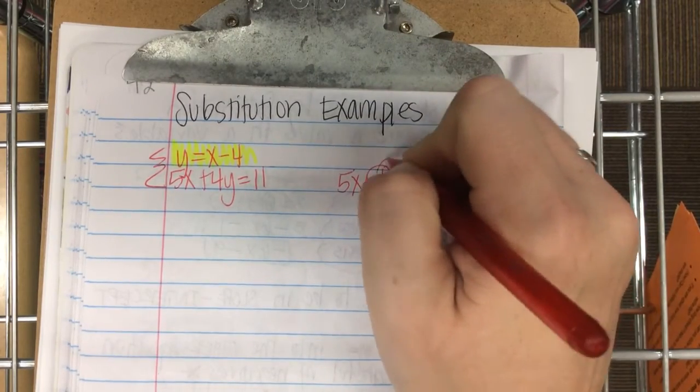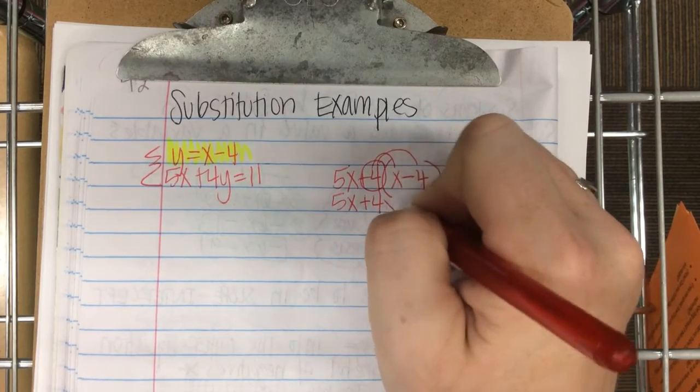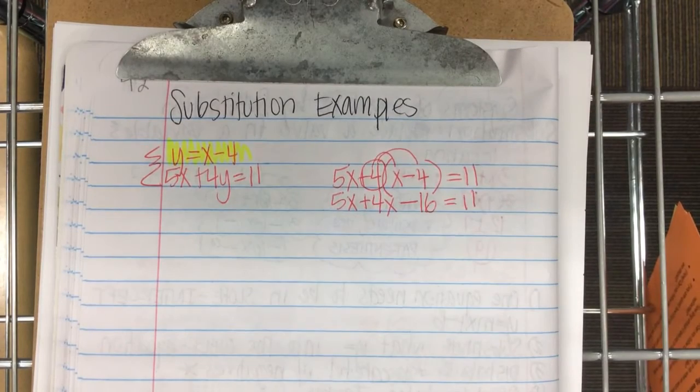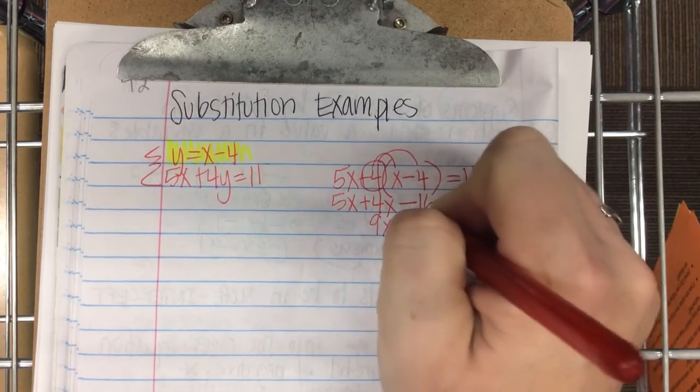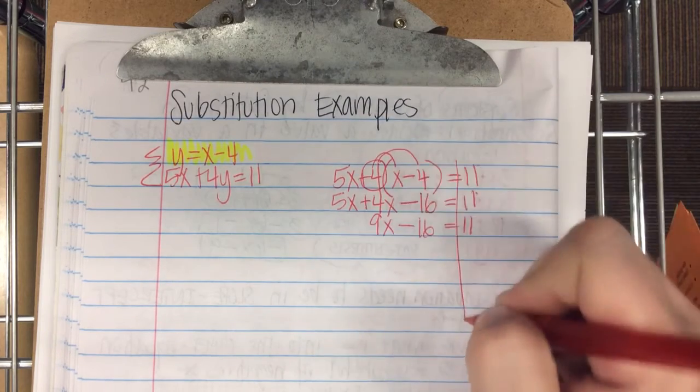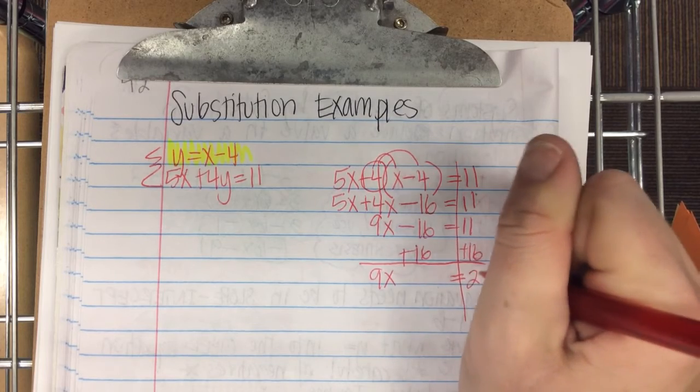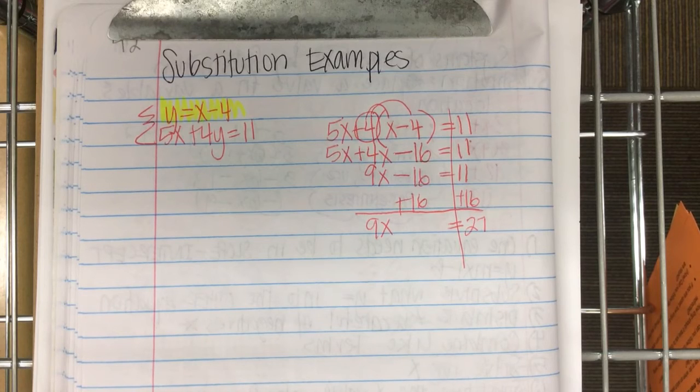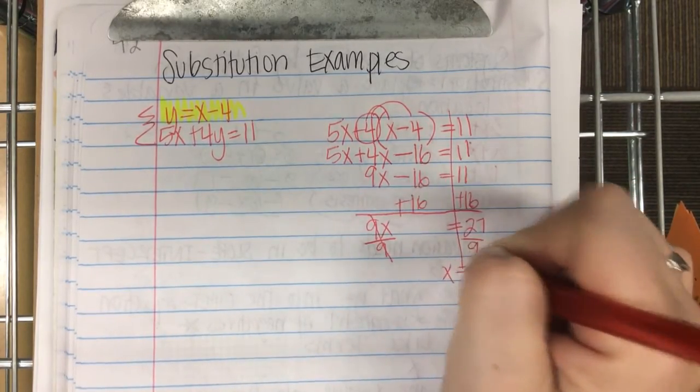After you do that, we distribute. So 5x plus 4x minus 16 equals 11. After you distribute, then you combine like terms. 5x plus 4x is 9x minus 16 equals 11. Add 16 to both sides. 9x equals 27. x equals what? 3.